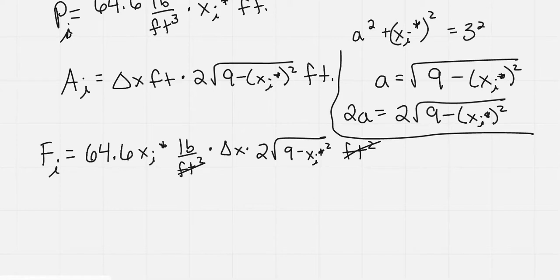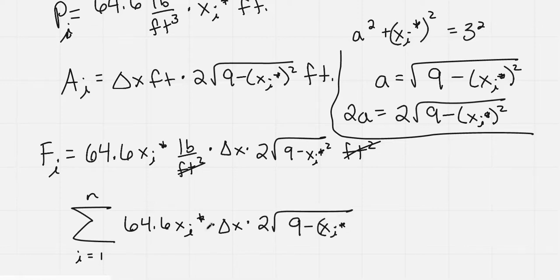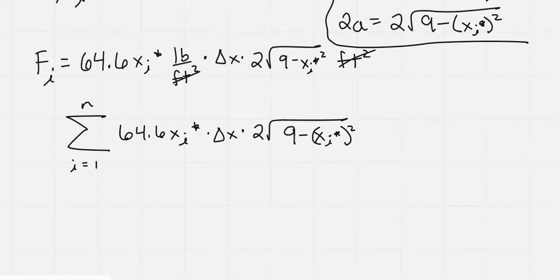So looking at that, and then if I do the Riemann sum, I get, because I want to add up all of those slices from the halfway, so I go from i equals 1 to n of 64.6 x sub i star times delta x times 2 times the square root of 9 minus x sub i star squared. And then if I take the limit of that as n goes to infinity, we get this integral.